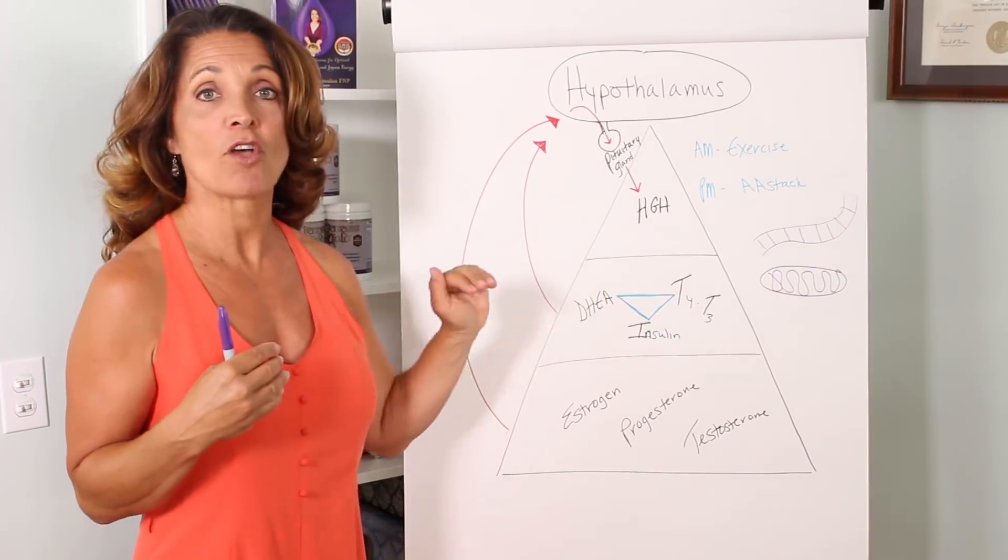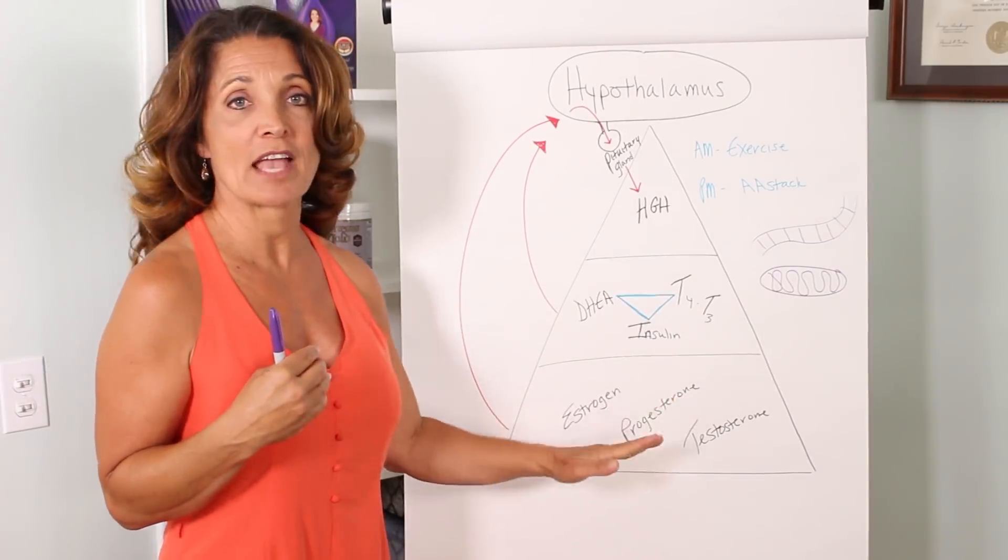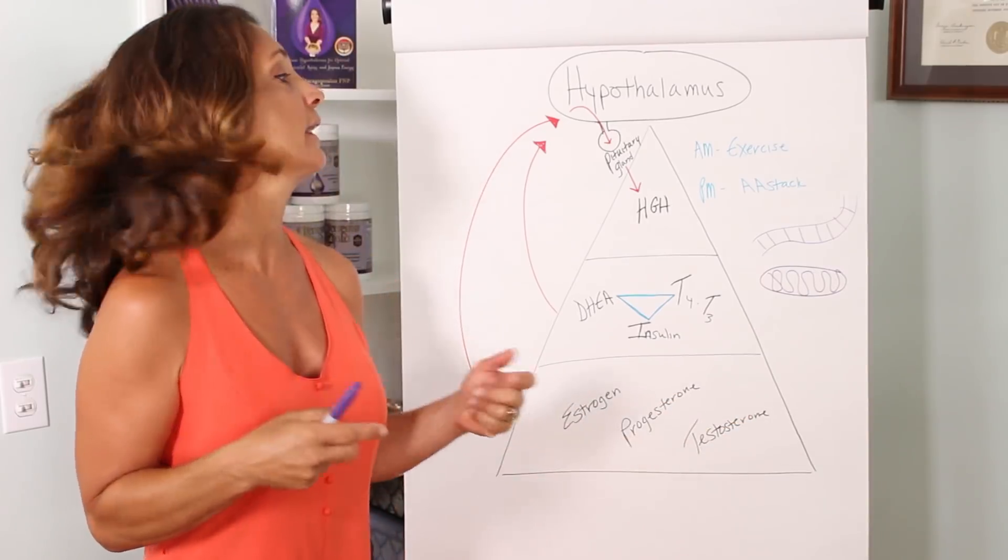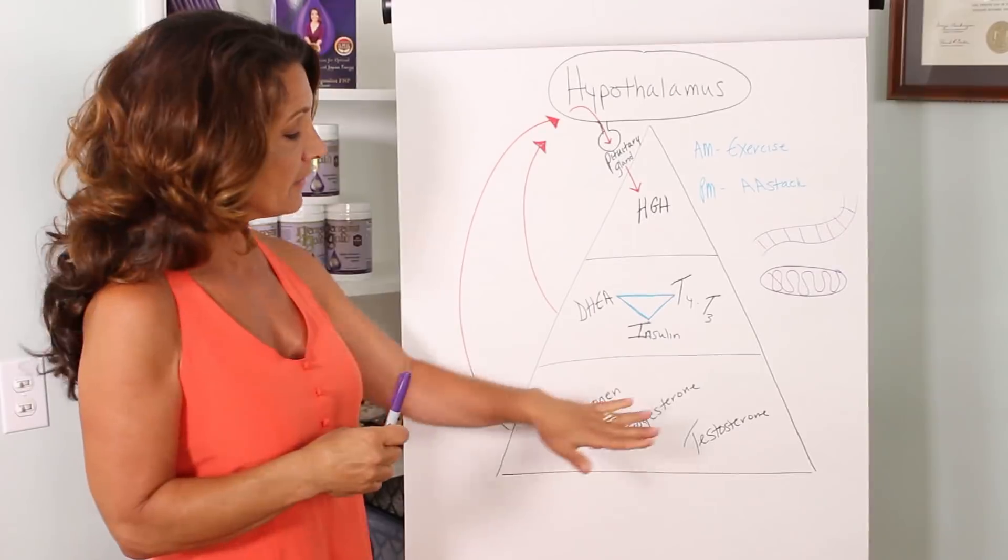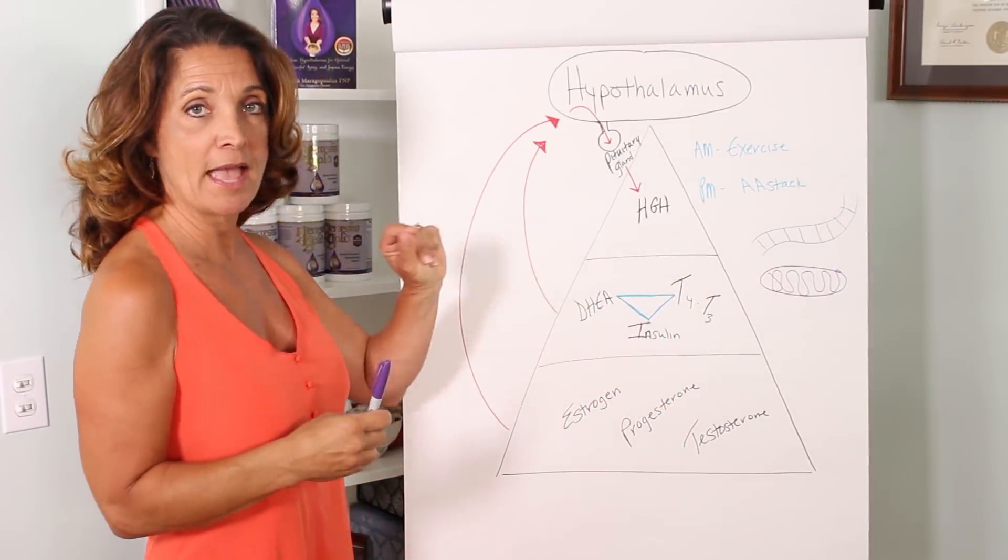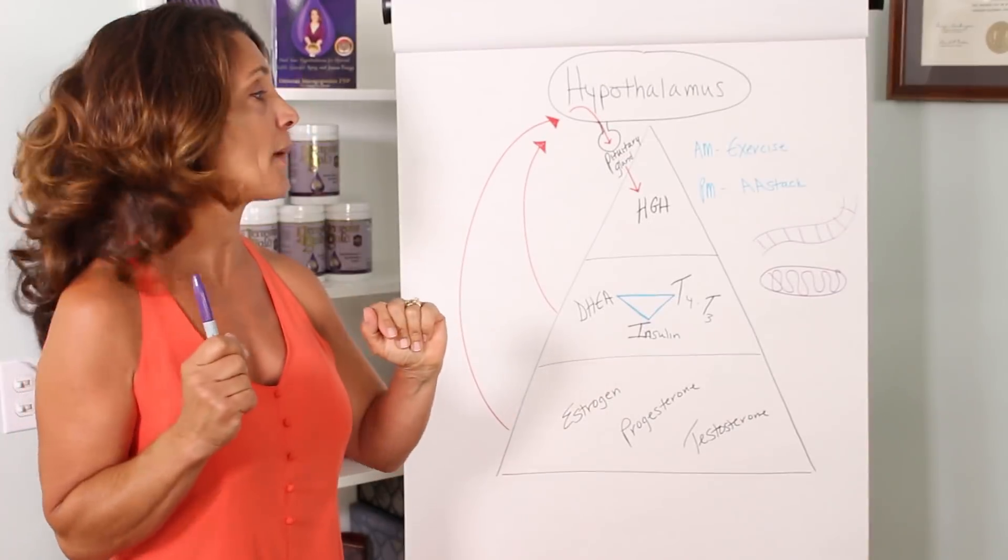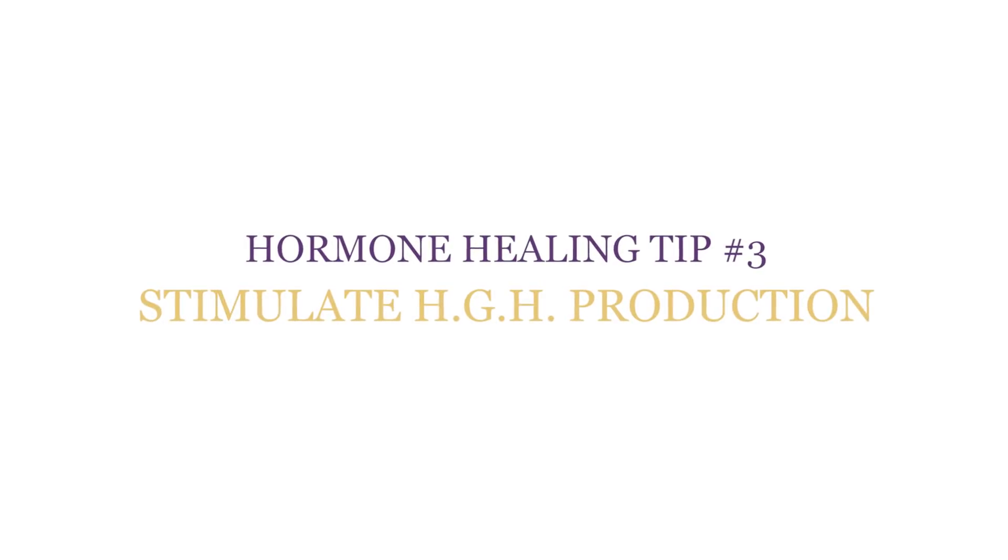DHEA and thyroid hormones are anti-aging hormones, as are the sex hormones, estrogen, progesterone, and testosterone. Now the third step is to move into, once you get these balanced, you've got your sex hormones balanced, you've got your adrenals, thyroid, and insulin production, and glucose levels balanced. Then, and only then, can you move into stimulating human growth hormone production.